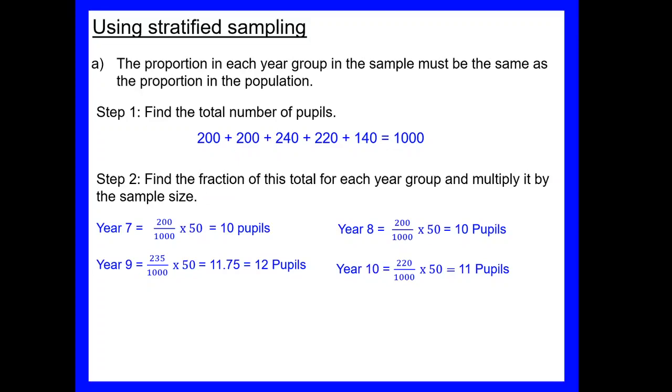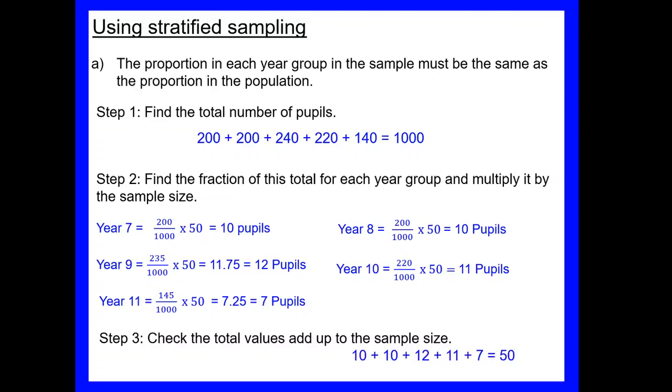In year 10, 220 one thousandths times 50 means exactly 11 pupils. And in year 11, 145 out of a thousand times 50 again gave us a decimal, 7.25, so this time I decided to round it down to seven pupils. The final step then is to check that our total adds up to the sample size. So we were told we're only allowed a sample of 50, so we need to check. And because we've done some rounding up and down, our number might not round to 50, so we need to check that first and we may have to adjust our rounding later if it doesn't add up to our sample size. So let's just check, and in this case it does add up to 50, so we've got our correct amount from each year group. If you need to pause the video now, just check through the calculations, make sure you're happy. So remember, we found the fraction of the year group and we've multiplied that by the sample size, so we get the same fraction of our sample to tell us how many pupils to choose.